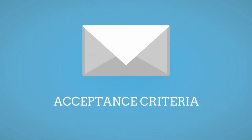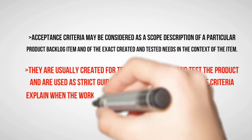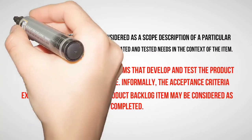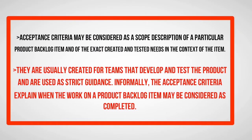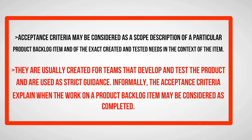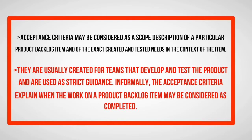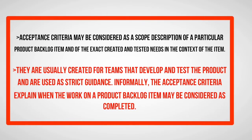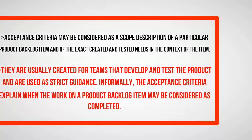Acceptance criteria is a popular term in software engineering and is closely related to acceptance testing procedures, where parts of the product undergo different types of testing. Acceptance criteria may be considered as a scope description of a particular product backlog item and the exact needs created and tested in the context of the item. They are usually created for teams that develop and test the product and are used as strict guidance. Informally, the acceptance criteria explain when the work on a product backlog item may be considered completed.